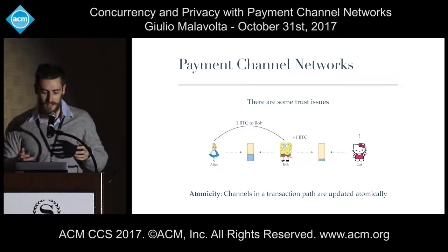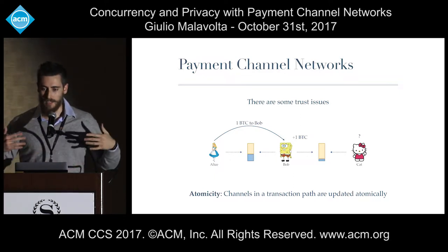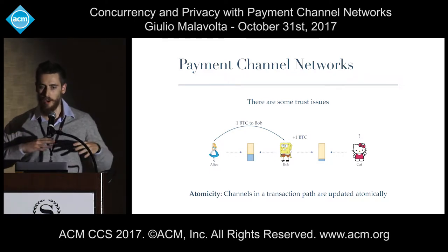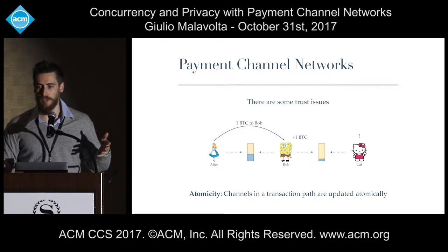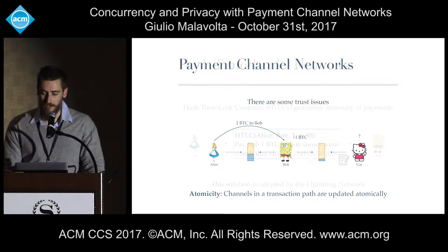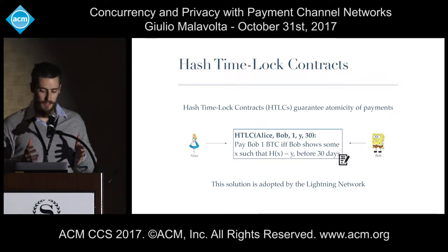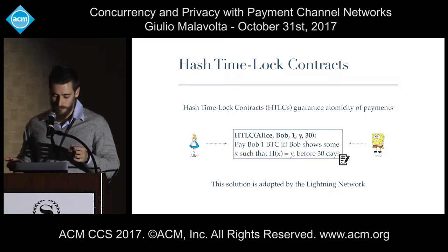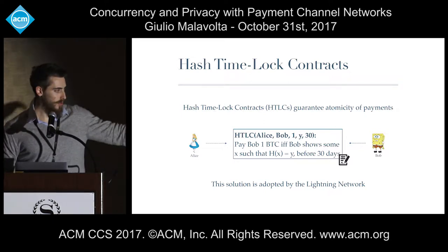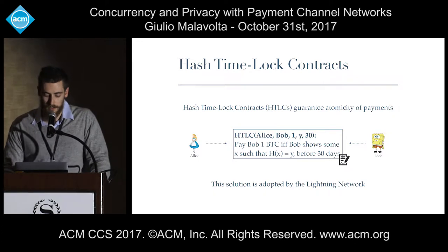What we would like to achieve is some sort of atomicity of the transaction. In a nutshell, this means we want the path to be updated atomically — either all the payment channels belonging to that path are updated, or none of them are. Let's take a look at the tool that current proposals for payment channel networks use to achieve atomicity. Here I'm referring to one specific implementation: the Lightning Network.